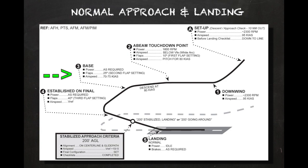The turn to the base leg is initiated when the aircraft is approximately 45 degrees from the landing threshold. At a non-towered airport, a radio call should be made announcing the aircraft's position. One very common error is pilots allowing the nose to pitch up in the turn from downwind to base, resulting in a loss of airspeed. Maintain the descent attitude throughout the turn using outside visual cues, and apply proper wind correction angle on the base leg so the aircraft's track remains 90 degrees to the landing runway.